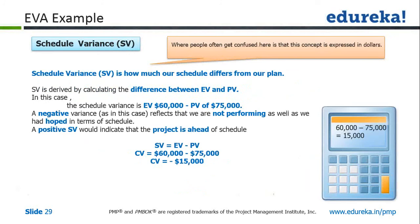We also calculate our schedule variance — how much schedule difference we have from our plan with respect to the dollar value of work. The formula for schedule variance is earned value minus planned value. Our earned value is $60,000 and the planned value in two weeks' time — which is 25% of the total duration — was $75,000. So the schedule variance is $60,000 minus $75,000, which gives a negative value of $15,000. Any negative value is not good news — it tells you that you are behind schedule by work worth $15,000.